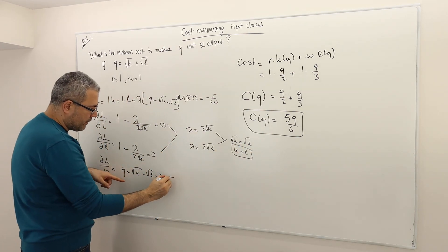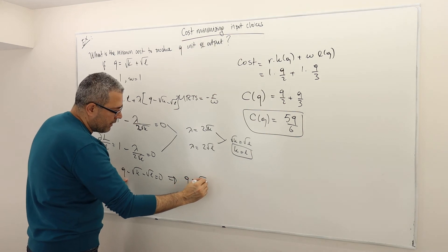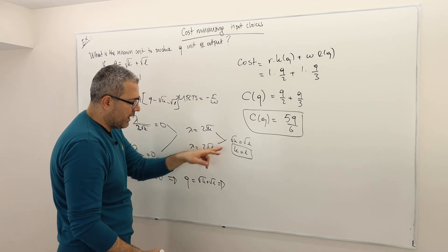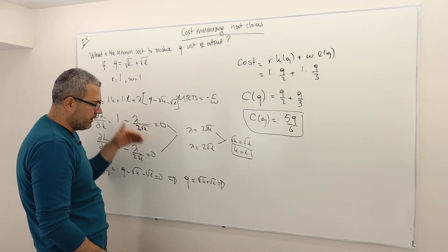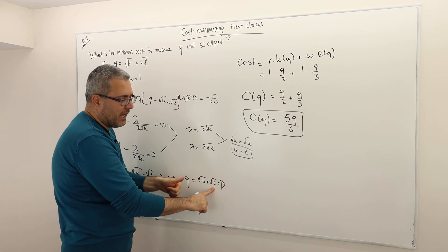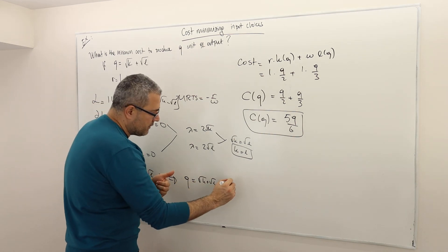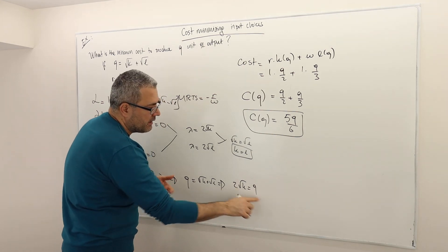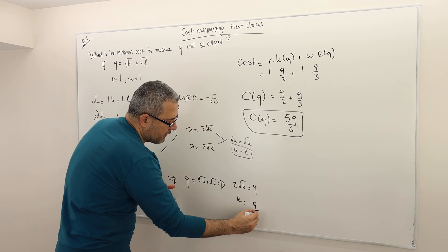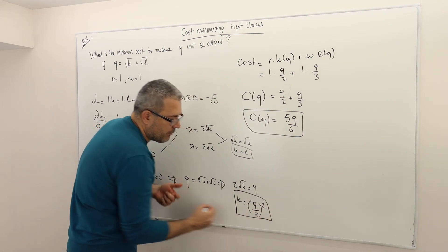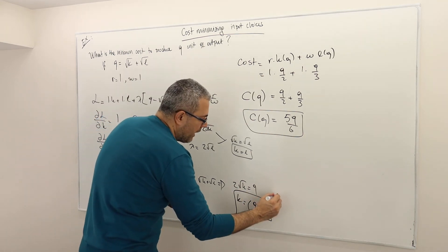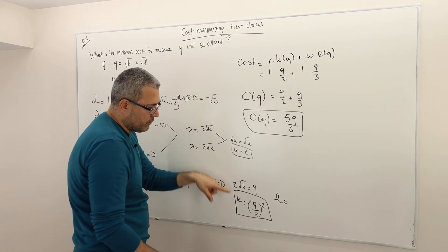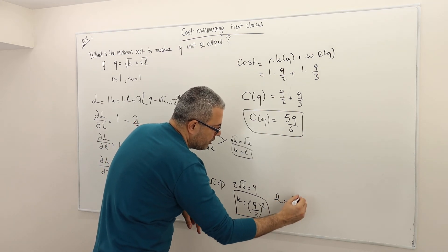Using the constraint Q equals √K plus √L, and substituting K equals L, we get Q equals 2√K, so √K equals Q/2, meaning K equals (Q/2) squared. That is K(Q). Since K equals L, labor L(Q) is also equal to (Q/2) squared, i.e., Q squared divided by 4.